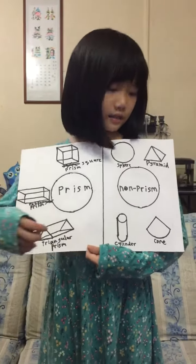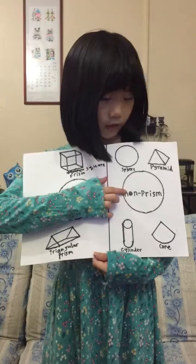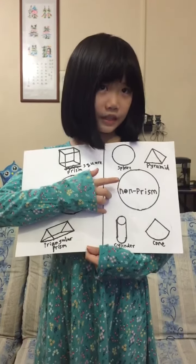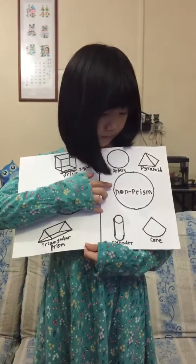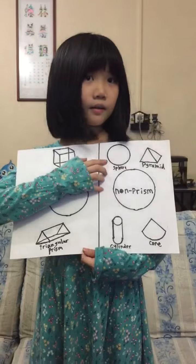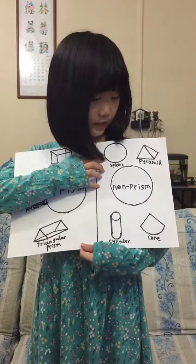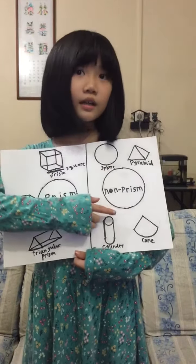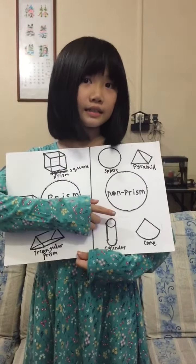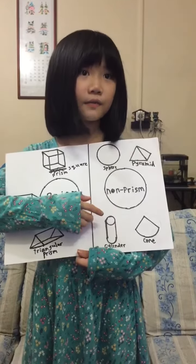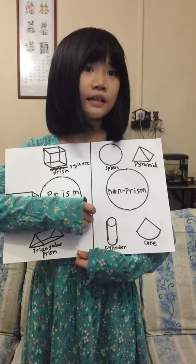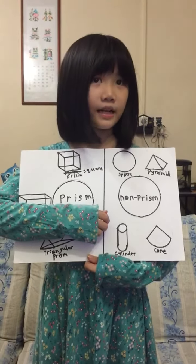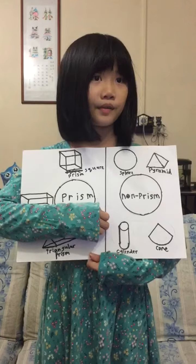Now let's talk about non-prisms. As you can see in the picture, sphere, cylinder, and cone have a curved surface, and they do not have five or more flat surfaces. They are non-prisms.